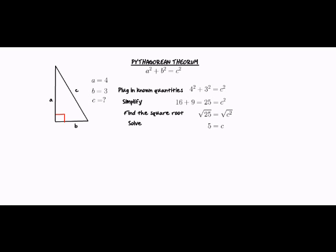You can also solve for an unknown side when you know one side and the hypotenuse. So if A is 7 and C is 8, we can solve for side B. So again, we're going to plug in the known quantities. 7 squared plus B squared equals 8 squared.